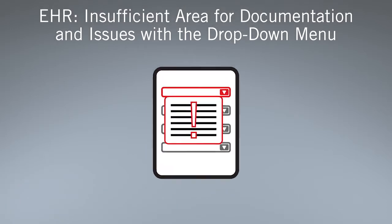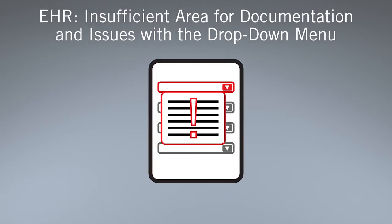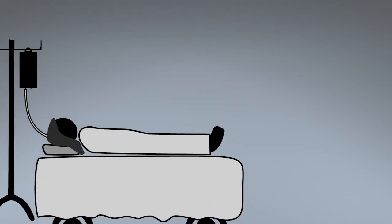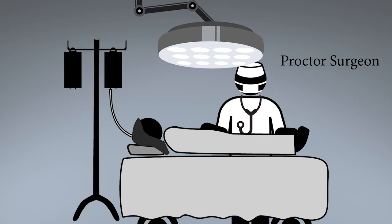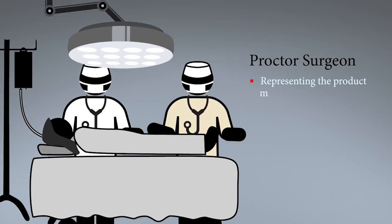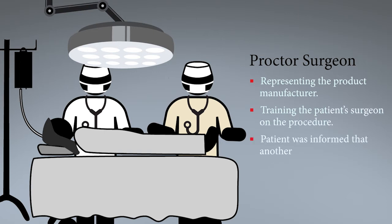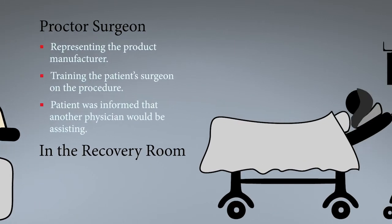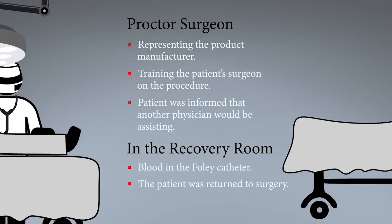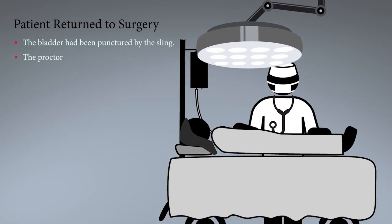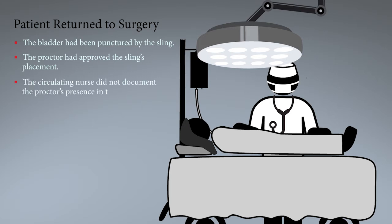The second example relates to having insufficient area for documentation and issues with the drop-down menu. A female had a bladder sling inserted for urinary incontinence. Her surgeon was assisted by a proctor surgeon who was representing the product manufacturer and training the patient's surgeon on the procedure. The patient was informed that another physician would be assisting. In the recovery room, there was blood in the Foley catheter, so the patient was returned to surgery. The bladder had been punctured by the sling. The proctor had approved the sling's placement. The circulating nurse did not document the proctor's presence in the OR due to lack of an option in the EHR drop-down menu.